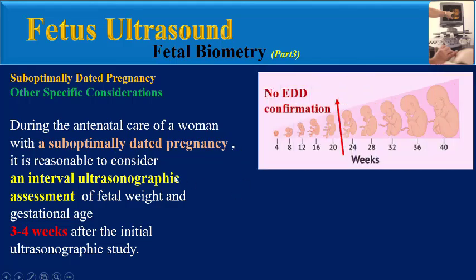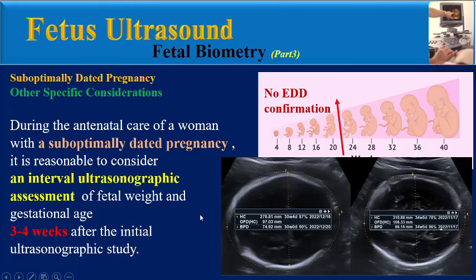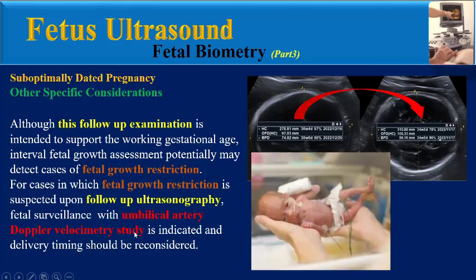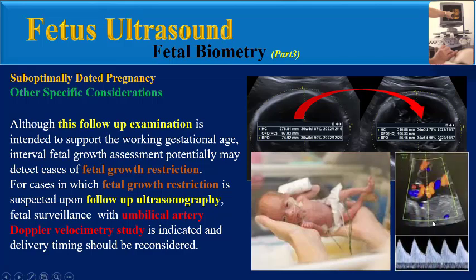Other specific considerations in sub-optimally dated pregnancy: during antenatal care, it is reasonable to consider an interval ultrasonographic assessment of fetal weight and gestational age 3 to 4 weeks after the initial ultrasound study. Although this follow-up examination is intended to support the working gestational age, interval fetal growth assessment may potentially detect cases of fetal growth restriction. For cases in which fetal growth restriction is suspected, follow-up ultrasonography and fetal surveillance with umbilical artery Doppler velocimetry study is indicated, and delivery timing should be reconsidered.